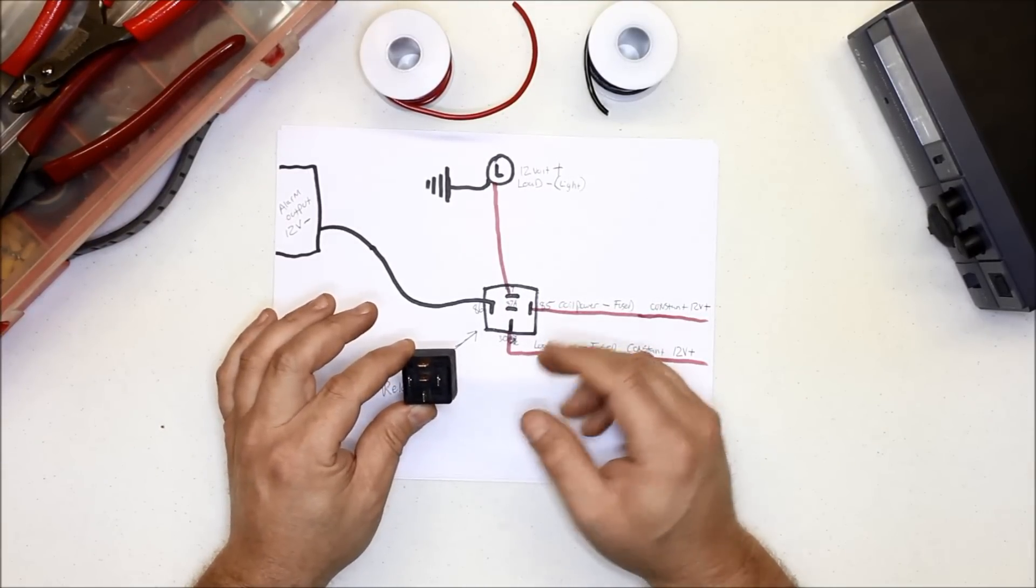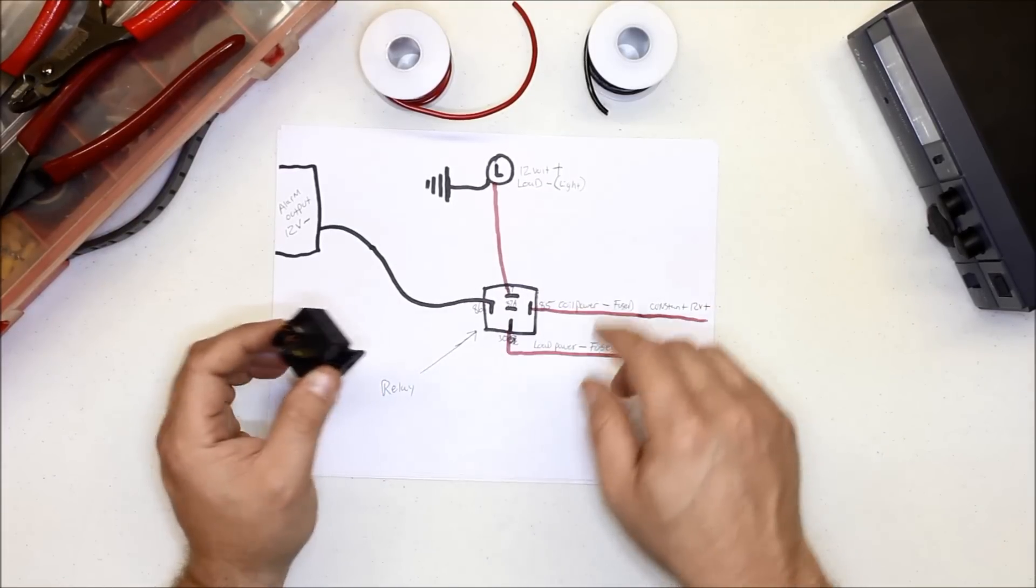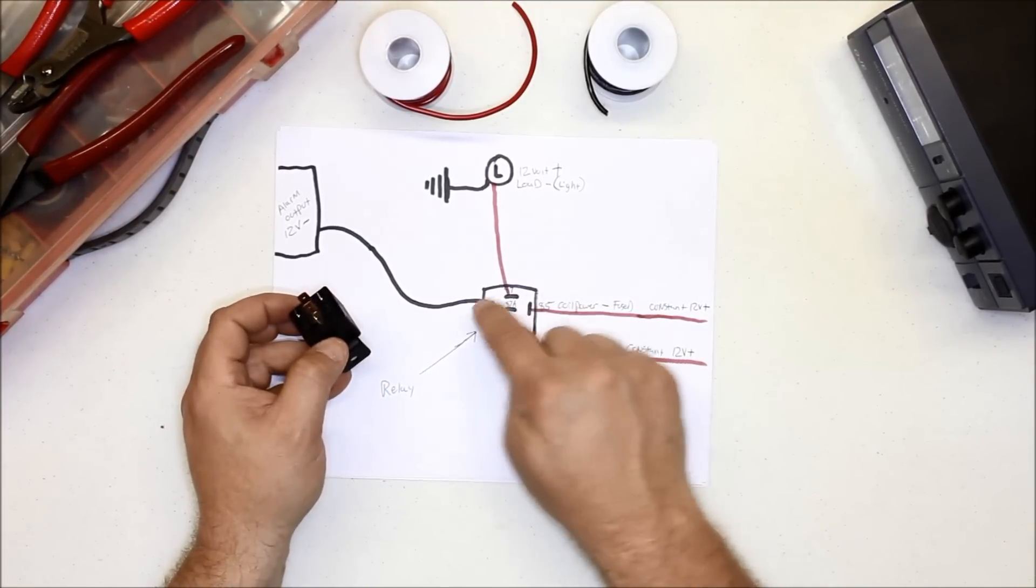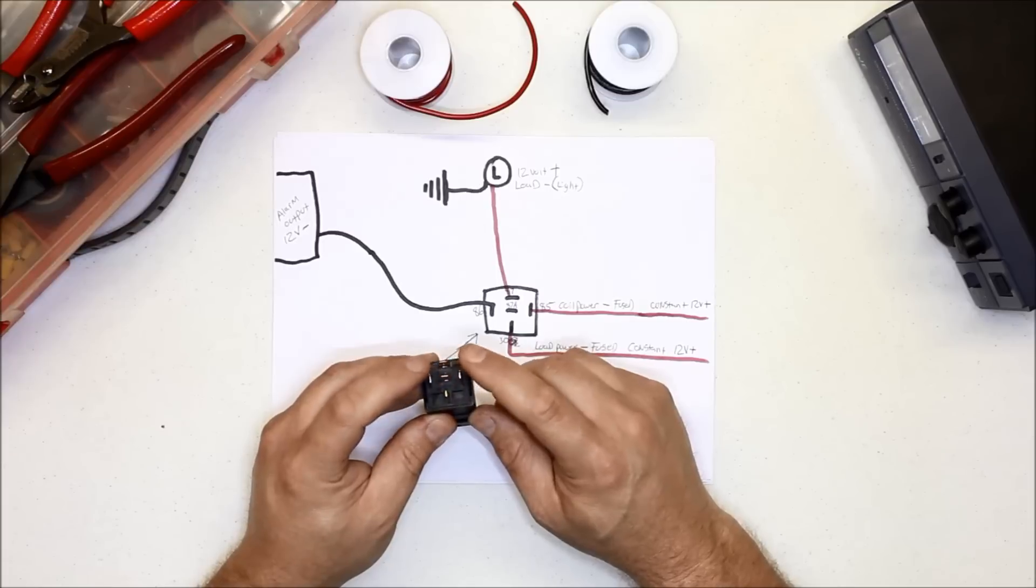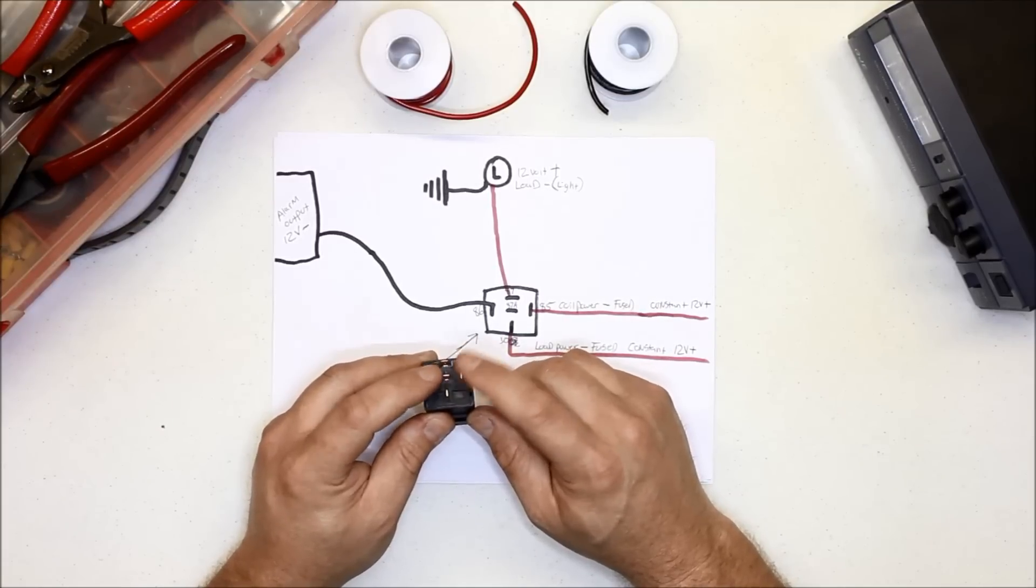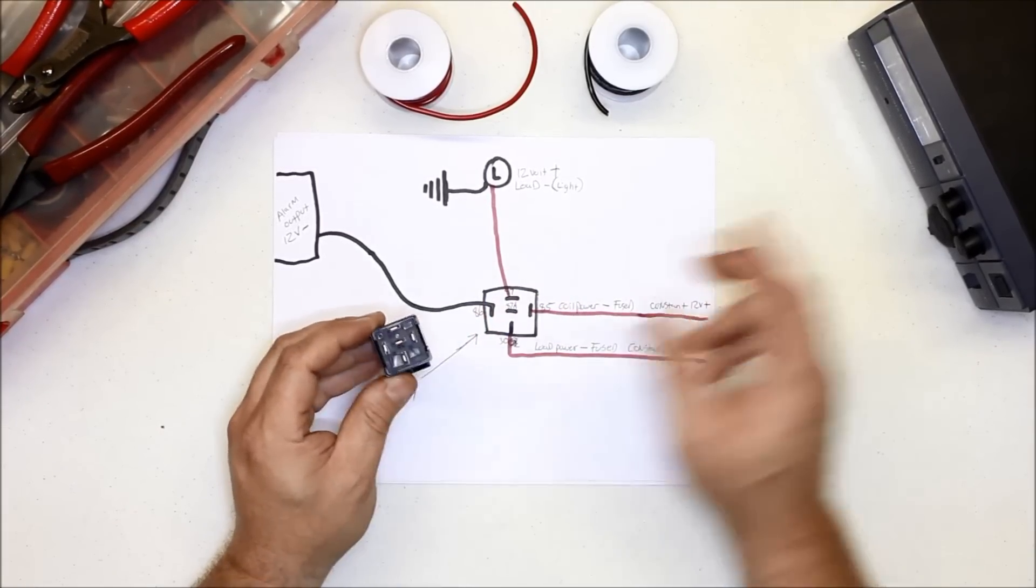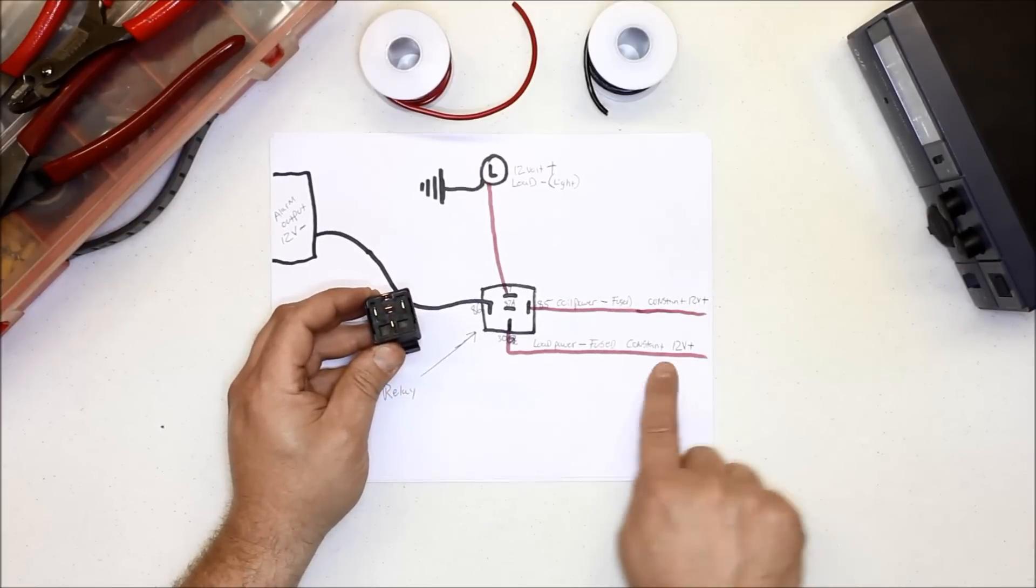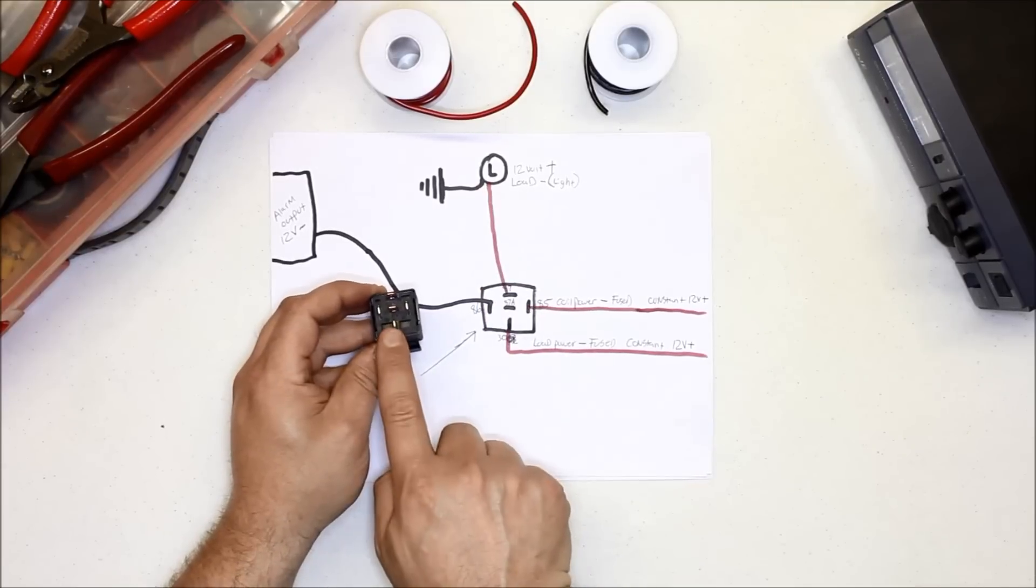If you're going to use a relay to power, say, your electric cooling fans, this would be different. Your two switching wires could be a real low gauge because the coil in the relay is a real low amperage, real low draw, so you could have real small switching wires. But then the load power going in to actually feed the load would have to be a heavier gauge wire than your switch wires.